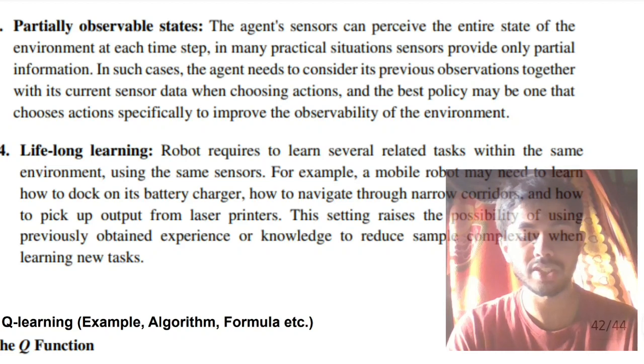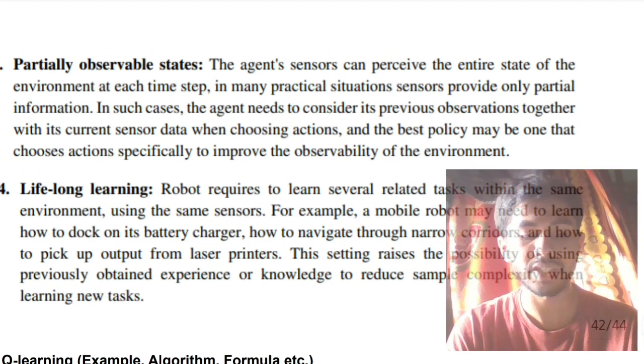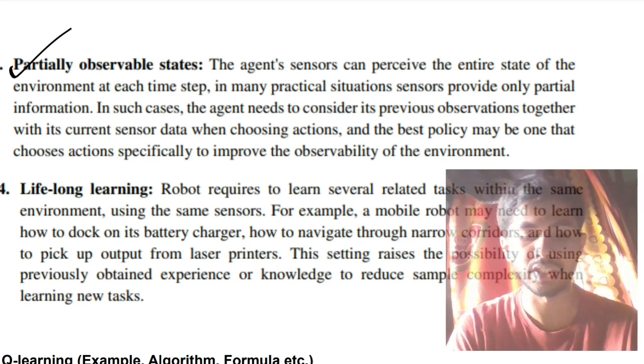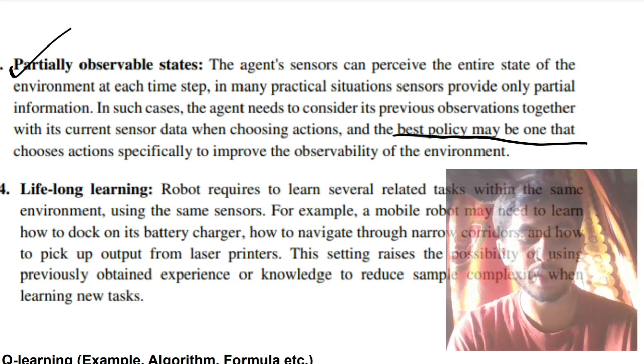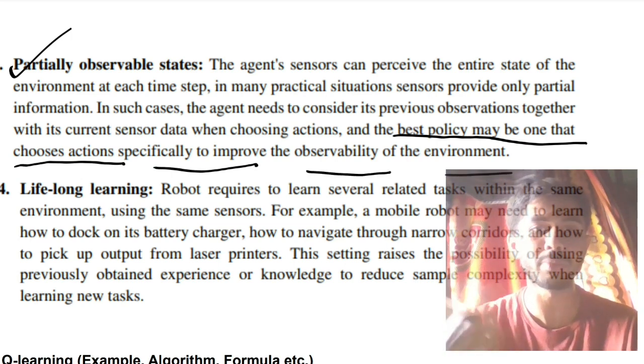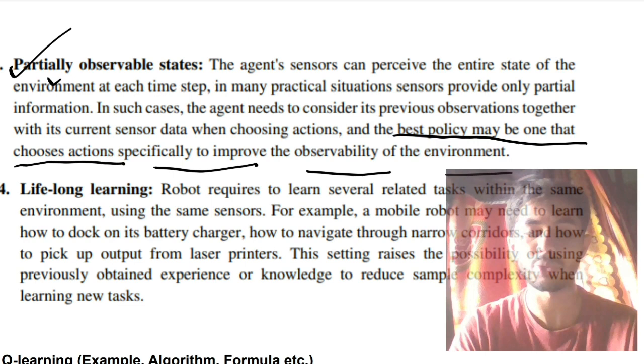Third is partially observable states. In partially observable states, you will be having some states which are not completely visible. You have some information regarding that. In all those cases, you have to explore more. The best policy may be the one that chooses an action that specifically improves the observability of the environment. Observability should be improved in the environment. That is partially observable states.